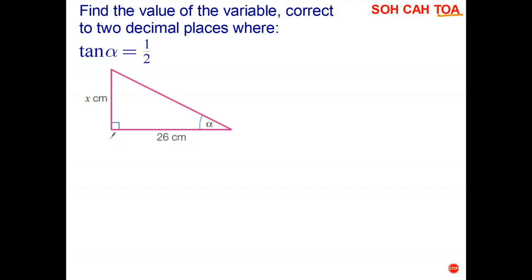Welcome back. Now, hopefully, the first thing you did is you identified the side opposite the right angle is the hypotenuse, the side opposite the angle of interest. In this case, the X is the opposite side, and the side next to the angle of interest is the adjacent side. So always start by doing that.